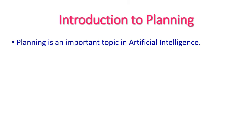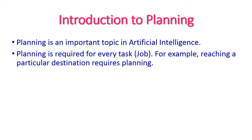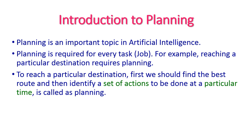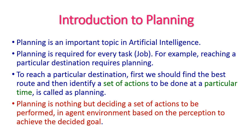Planning is an important topic in artificial intelligence and is very much required for every job. Suppose if we want to reach a particular destination, planning is required. To reach a particular destination, first we should find the best route and then identify a set of actions to be done at a particular time. This is called planning. Planning is deciding a set of actions to be performed in an agent environment based on perceptions to achieve the decided goal.